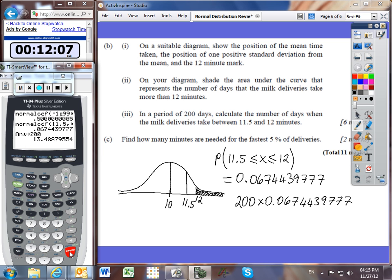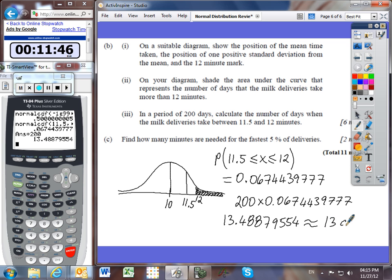I'll take my answer and multiply it by 200, and we'll find out that it happens 13.48 days. That rounds, of course. We can't have a fractional number of days in which the milk deliveries take. So I'm going to round it down to the nearest whole number. There will be 13 days in which deliveries took between 11.5 and 12 minutes.